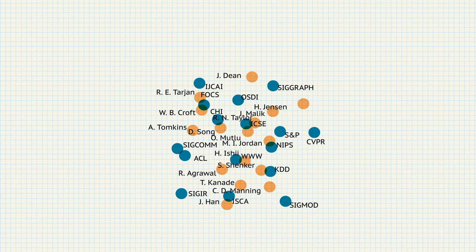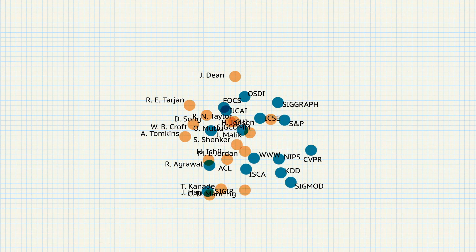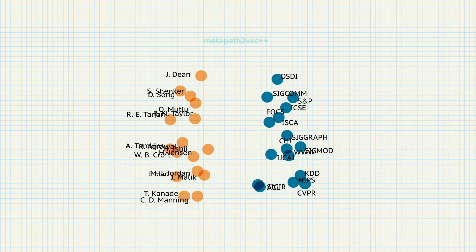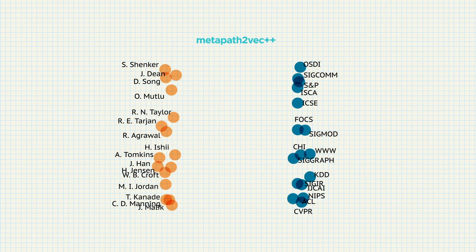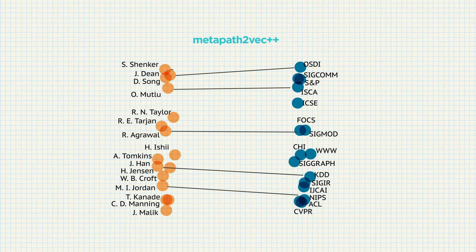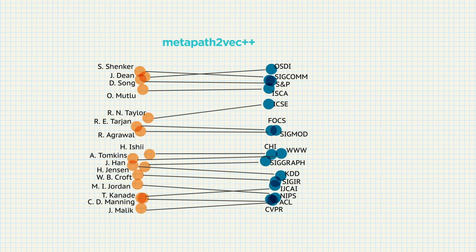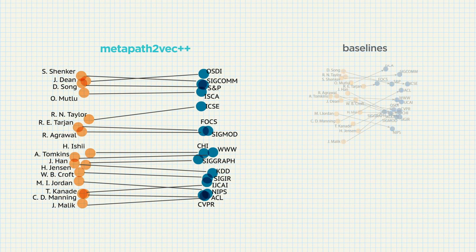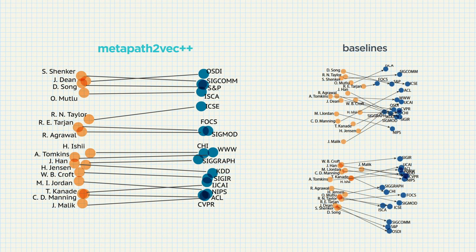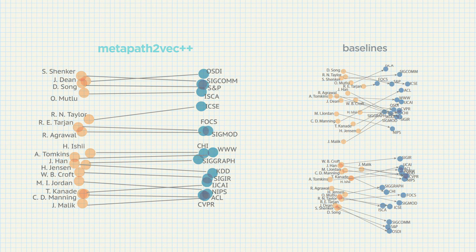Here we have 16 top computer science venues in various subdomains and their corresponding high-profile authors. The venues and authors represent two different types of nodes. By visualizing the latent representations of these two types of nodes with our metapath2vec++ model in two-dimensional space, we can observe that the model is able to automatically organize these two types of nodes and implicitly learn the internal relationships between them, as shown by the similar directions and distances of the arrows connecting each author-venue pair. These properties are not discoverable with conventional network embedding models designed solely for homogeneous networks.